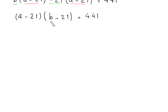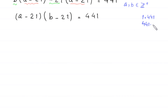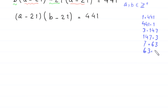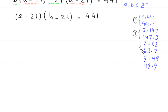Now we have a product of two factors on the left-hand side, and since a and b are positive integers, 441 can be factorized as: 1 times 441, 441 times 1 (Case 1); 3 times 147, 147 times 3 (Case 2); 7 times 63, 63 times 7 (Case 3); and 9 times 49, 49 times 9 (Case 4).